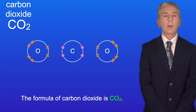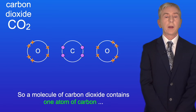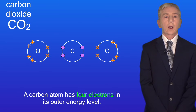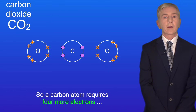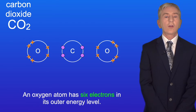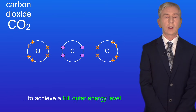The formula of carbon dioxide is CO2, so a molecule of carbon dioxide contains one atom of carbon and two atoms of oxygen. A carbon atom has four electrons in its outer energy level, so a carbon atom requires four more electrons to achieve a full outer energy level. An oxygen atom has six electrons in its outer energy level, so an oxygen atom requires two more electrons to achieve a full outer energy level.